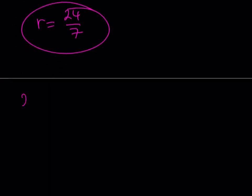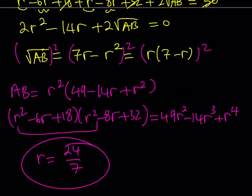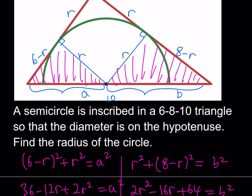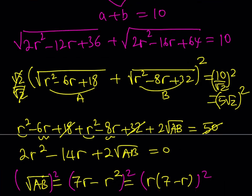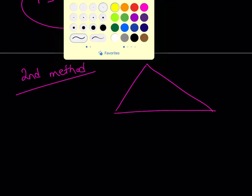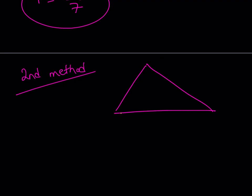Let's look at the second solution method. The second method involves another tool we use a lot in geometry, and that's called similarity. Let's go back to our picture — we have the 6-8-10 triangle with a semicircle inscribed like this. I'd like to find r using similarity.